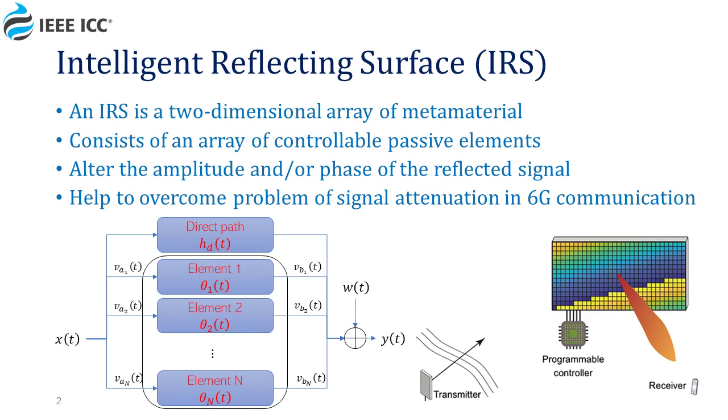Our work is based on the Intelligent Reflecting Surface or IRS, which is a two-dimensional array of passive elements, each of which can change the phase of the signal reflected from it and attenuate its amplitude.